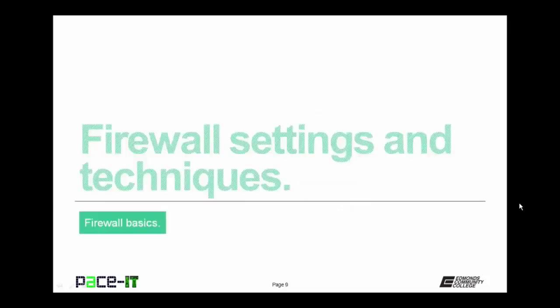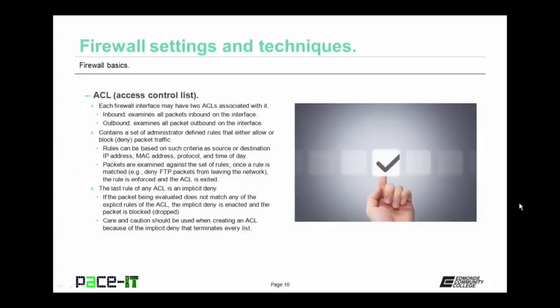It's time to proceed with firewall settings and techniques. First up is the ACL. Each firewall interface may have two ACLs associated with it — an inbound ACL and an outbound ACL. The inbound ACL examines all packets inbound on that interface, while an outbound ACL examines all packets outbound on that interface. The ACL contains a set of administrator-defined rules that either allow or deny packet traffic. Rules can be based on such criteria as source or destination IP address, MAC address, protocol, and time of day.